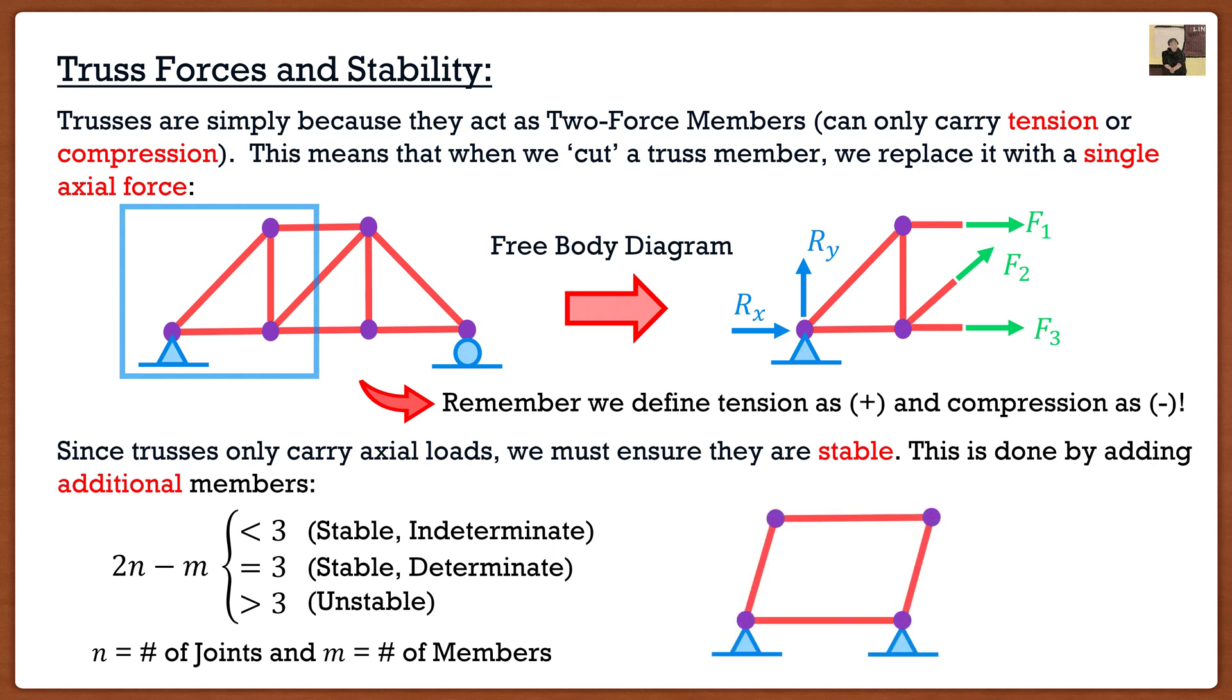Let's say that we have this truss right here. And again, remember that all of the connections act as pins. So if I were to place a force, a lateral force at the top of this truss, we know that since there's no moment resistance, this truss is just going to go, right? It's just going to fall over. It's going to provide no resistance. So we know intuitively that this truss is actually unstable.